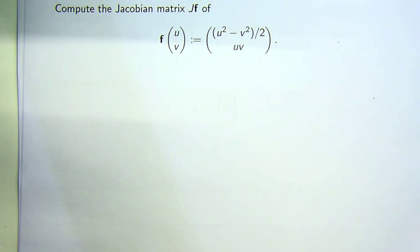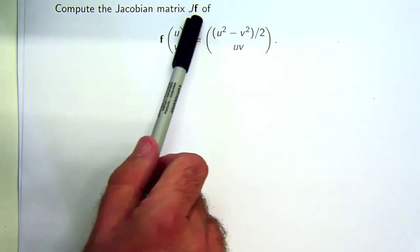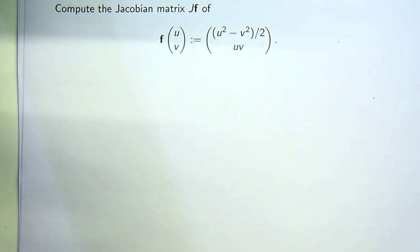We're asked to compute the Jacobian matrix of f, and we denote the Jacobian matrix of f by Jf. The Jacobian matrix is important, for example, in triple integrals where you're doing change of variables.